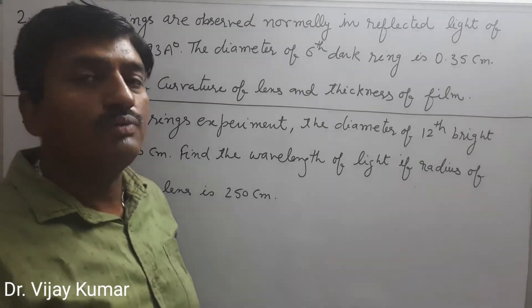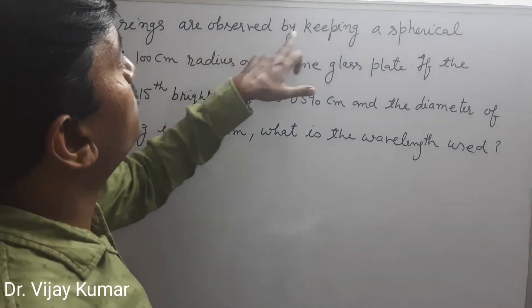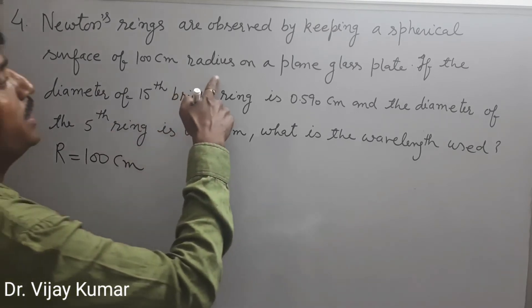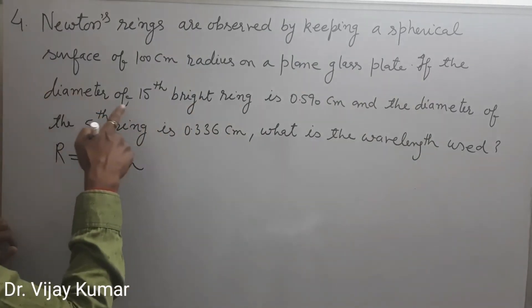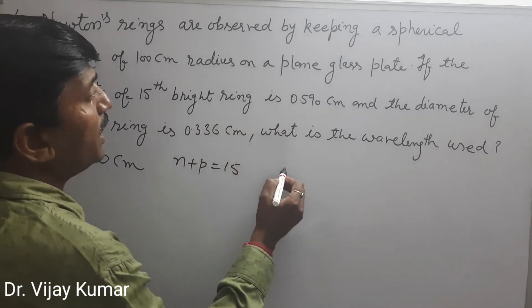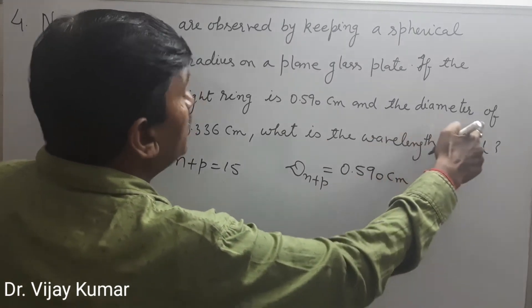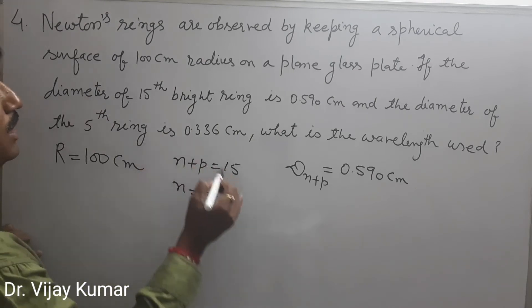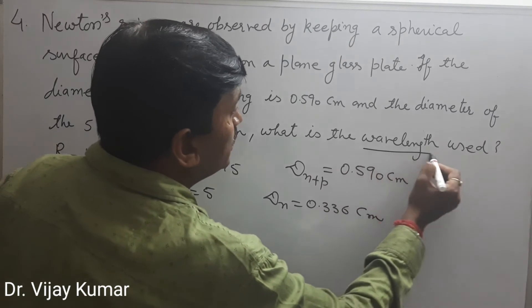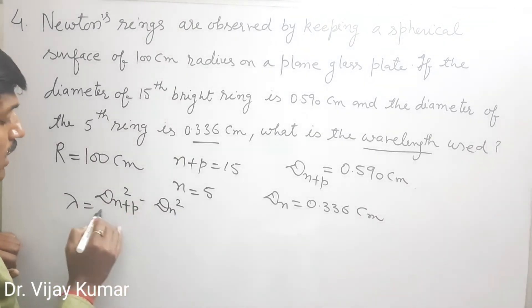Now we move to the fourth problem. Newton's rings are observed by keeping a spherical surface of radius R = 100 centimeter on a plain glass plate. The diameter of the 15th bright ring, denoted D(n+p), is 0.59 centimeter, and the diameter of the 5th ring, Dn, is 0.336 centimeter. What is the wavelength used? The formula is λ = (D(n+p)² − Dn²) / (4PR).